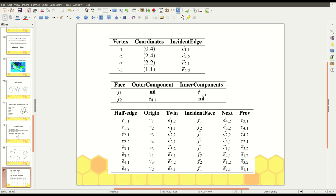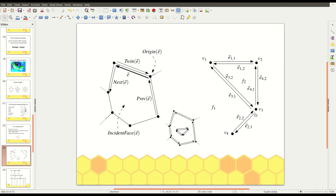We have an inner component that is this part. So, we should place an incident edge of that part that is e11. So, this is an inner component and we can place any of the incident edge of that face. So, we place e11. We can also place e42 or e31, that's the same thing. We can also place e42 or e31 in this place.